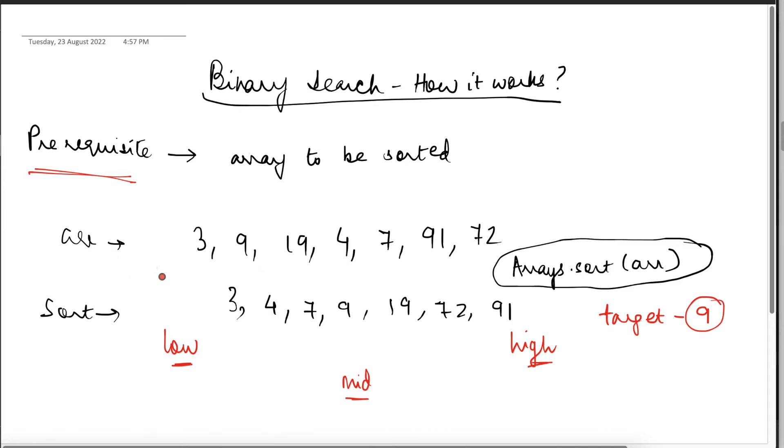So if initially the array is unsorted, we can use, in Java, there is a built-in function Arrays.sort. And then we can sort the array. After we sort the array is when we can apply the binary search logic to it.